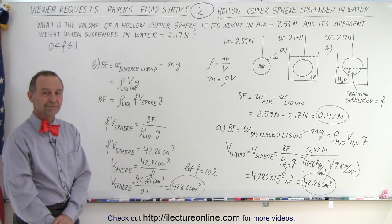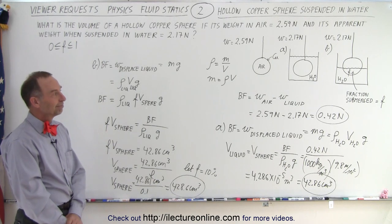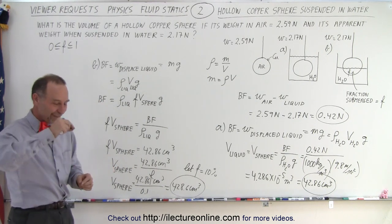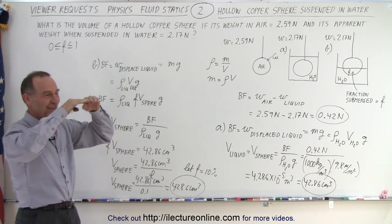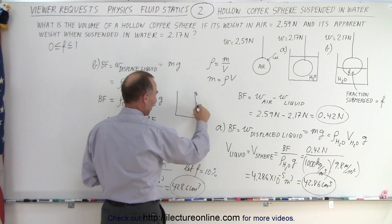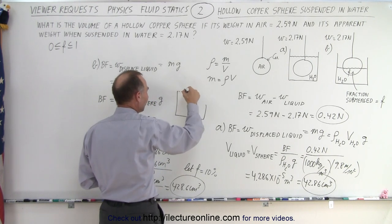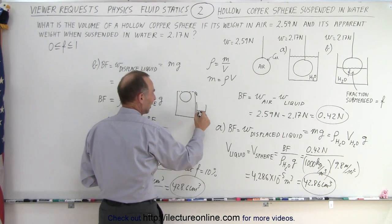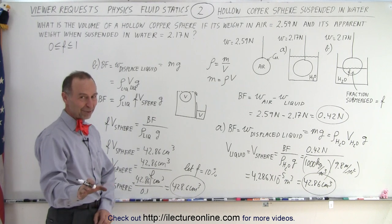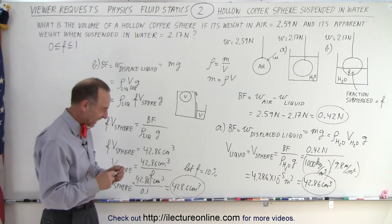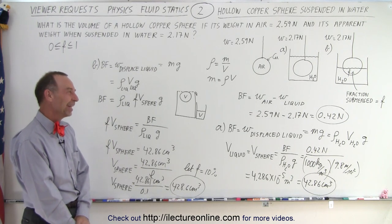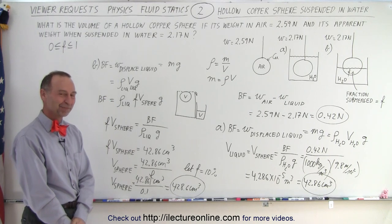It would be easy to just do water displacement — fill the container to the top and measure how much water comes out. Using Archimedes' principle: you put a pitcher with an overflow spout, collect the displaced water in a beaker, force the sphere to be fully submerged, and the volume of water collected equals the volume of the sphere. That's why Archimedes is so famous — very elegant.